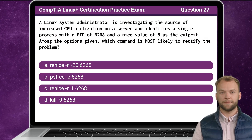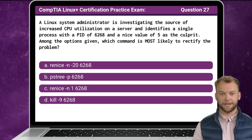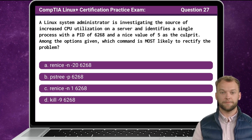Question 27. A Linux system administrator is investigating the source of increased CPU utilization on a server and identifies a single process with a process ID of 6268 and a nice value of 5 as the culprit. Among the options given, which command is most likely to rectify the problem?